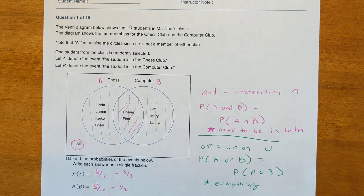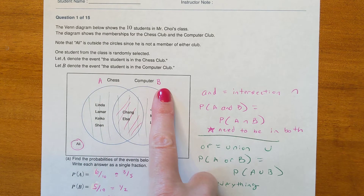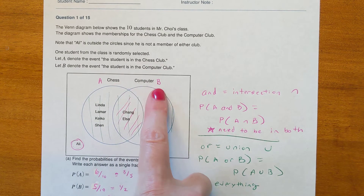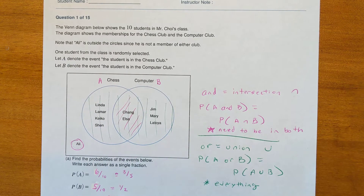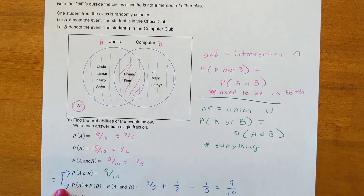Let A denote the event that the student is in the chess club — I put an A by that. Let B denote the event that the student is in the computer club — put a B by that, just to help keep track of things.